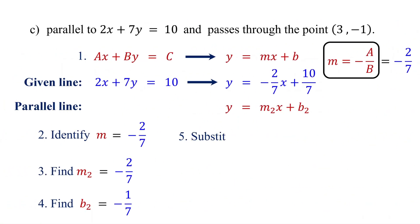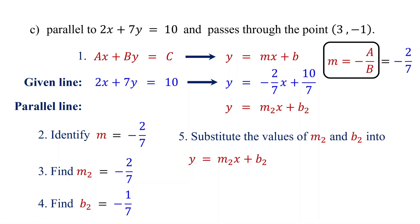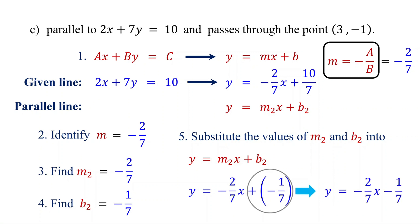Finally, substitute the values of m2 and b2 back into y equals m2x plus b2. Replace m2 with negative 2 sevenths and b2 with negative 1 sevenths. Remember, adding a negative is the same as subtracting a positive. This is the equation of the parallel line in slope-intercept form.